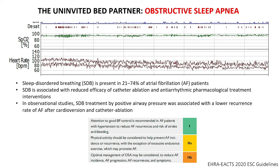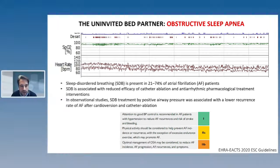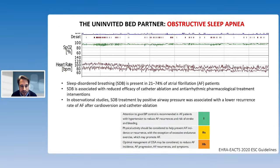If we try to attempt a pharmacological treatment with antiarrhythmic drugs or catheter ablation of AF, we might have less effectiveness, particularly in patients with sleep apnea. We do have data from observational studies that the treatment of sleep-disordered breathing by positive airway pressure can be associated with a lower recurrence of AF. However, the data from randomized controlled trials are not so homogeneous in terms of showing a net benefit of treating sleep apnea with CPAP with the aim of reducing AF recurrence.